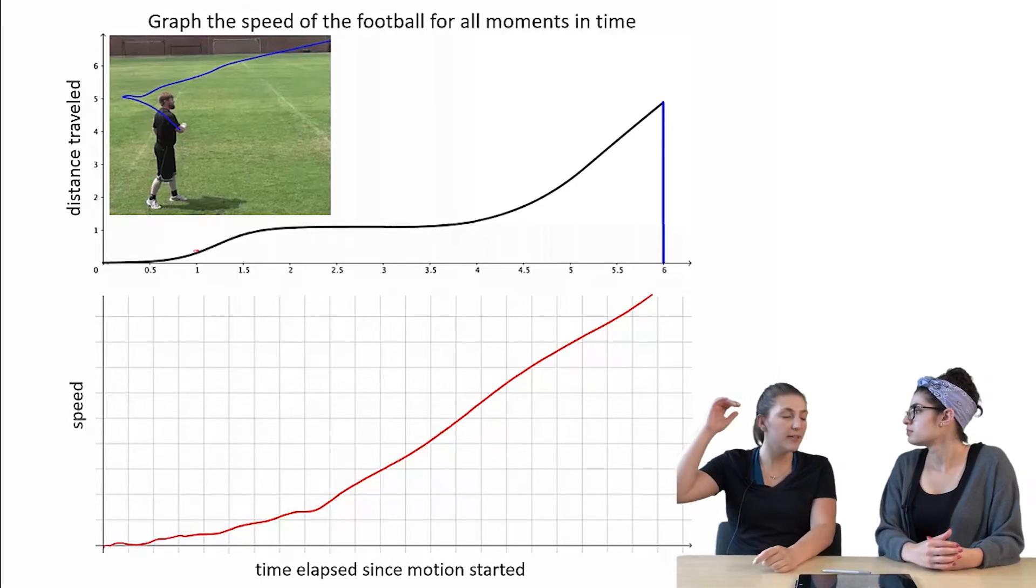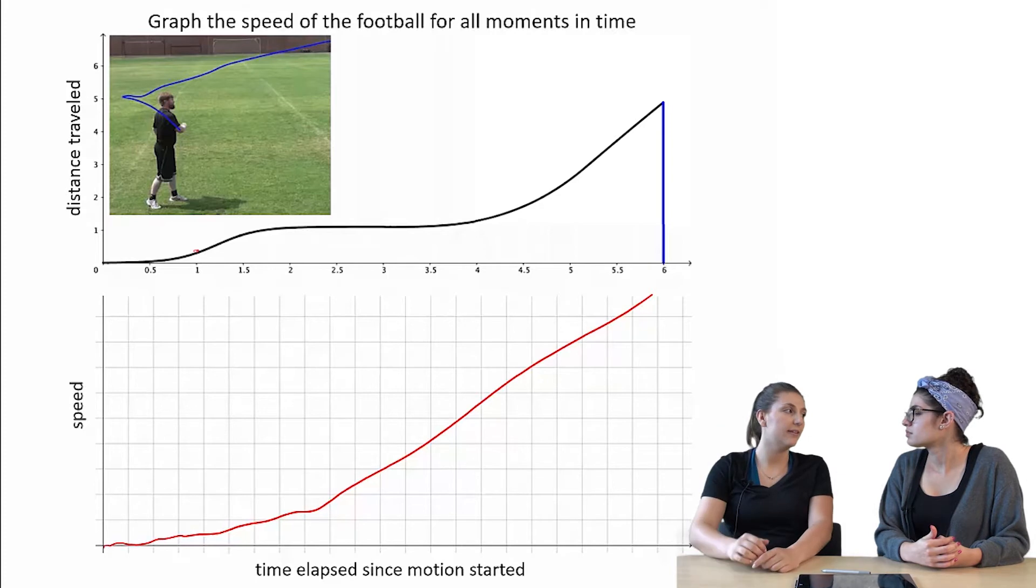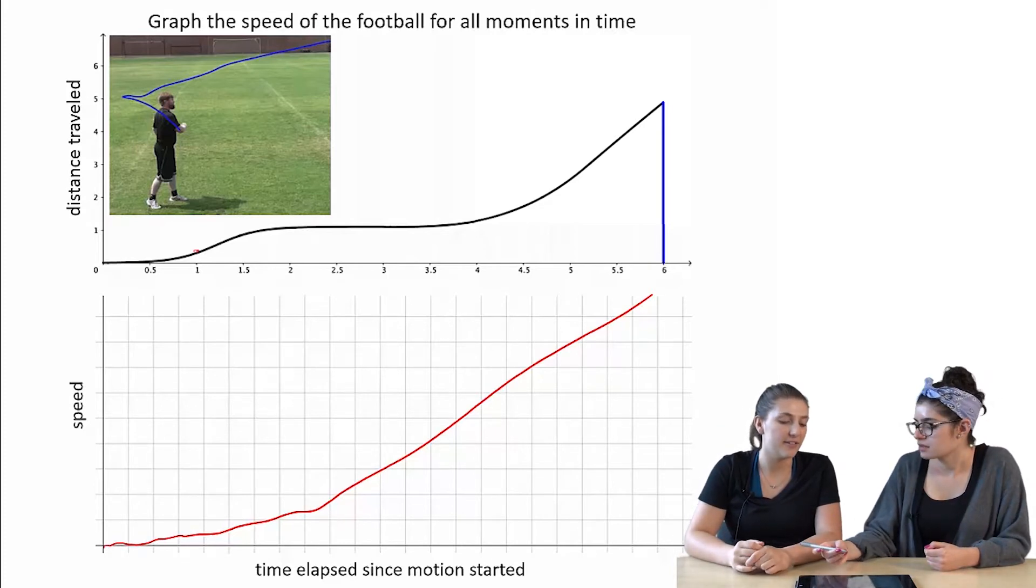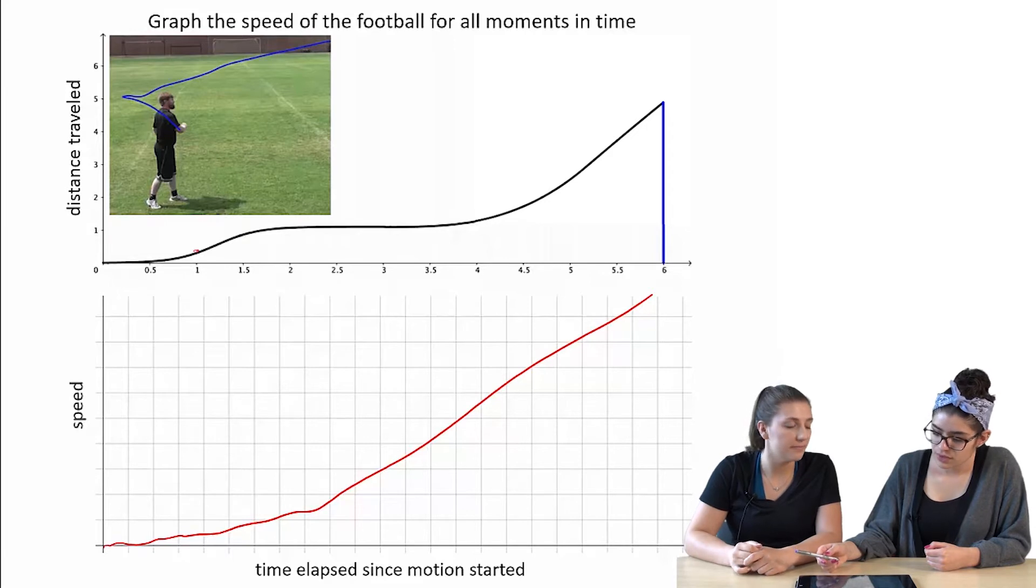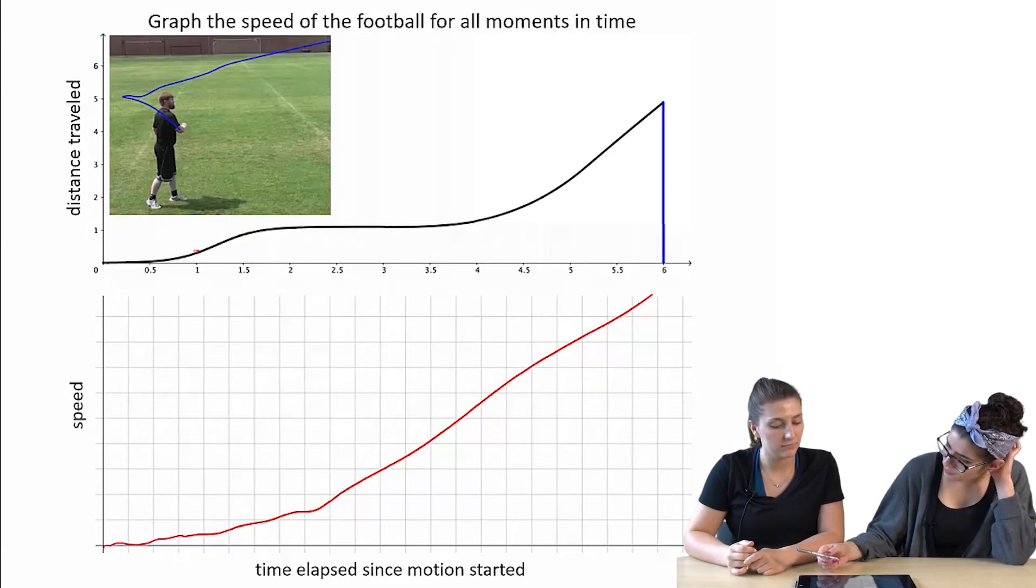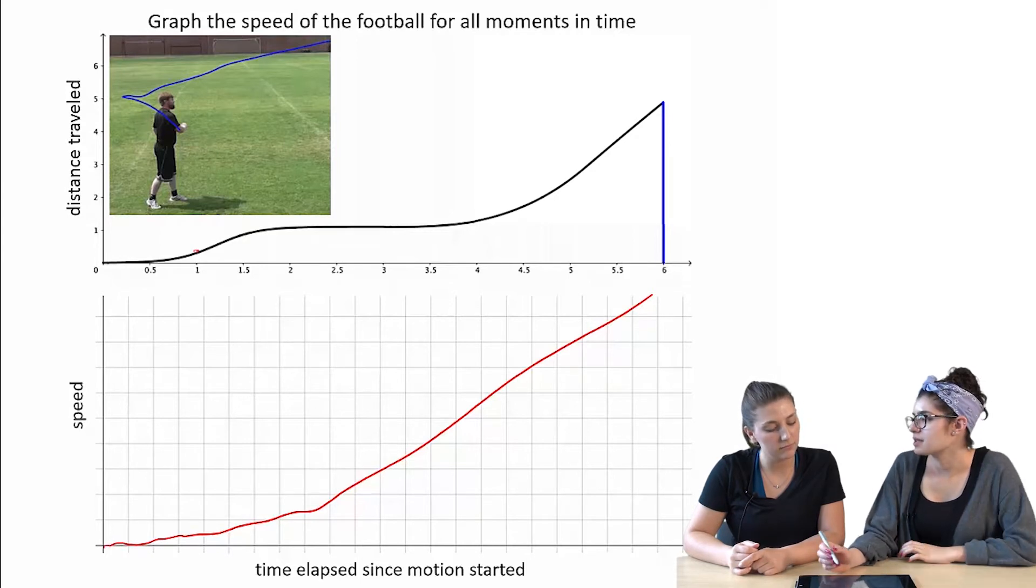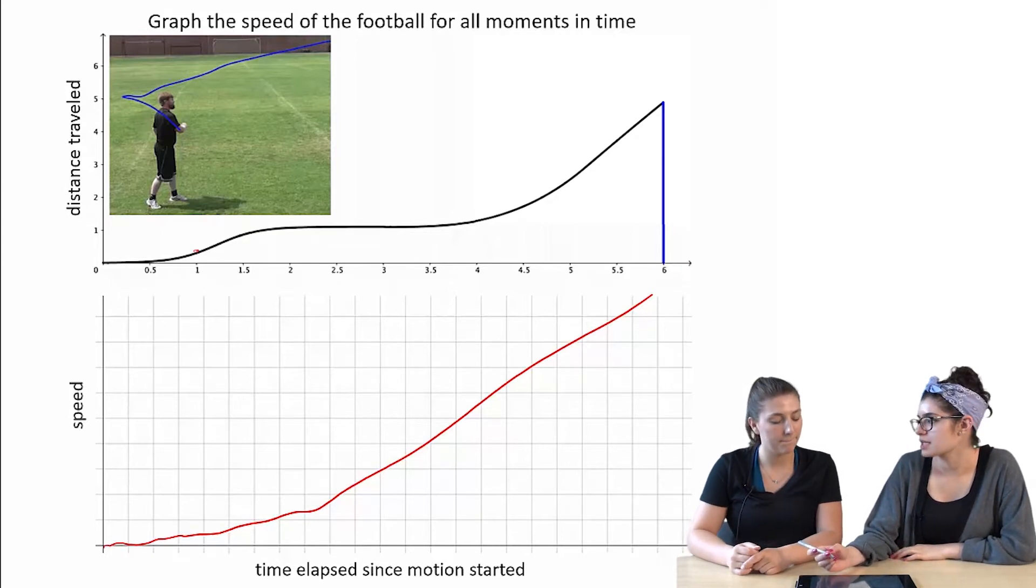I mean, like, does he kind of stop when he pulls the ball back? Yeah. Oh, so you're saying that's not really shown there? Yeah. It's just not really precise enough. Okay. I think that if we were to pick a couple points in time and calculate the speed, that might give us a more precise graph.